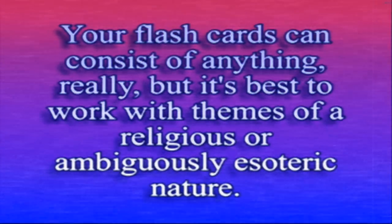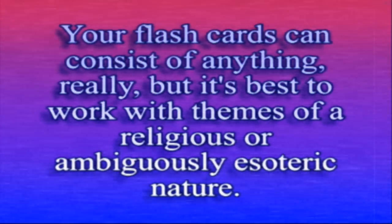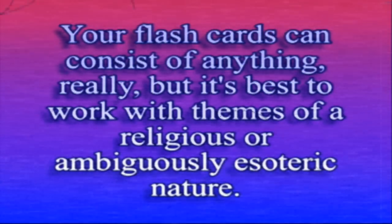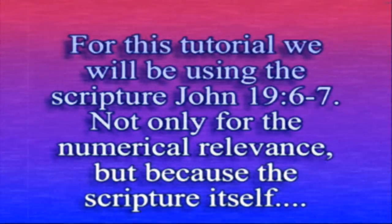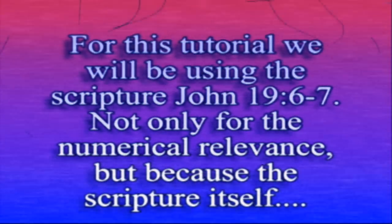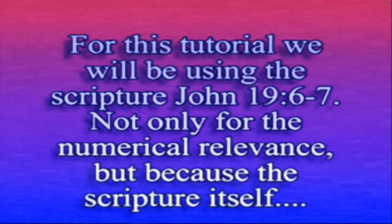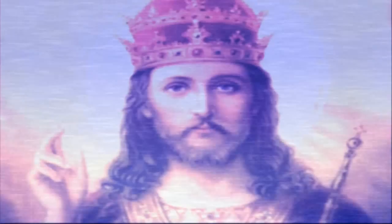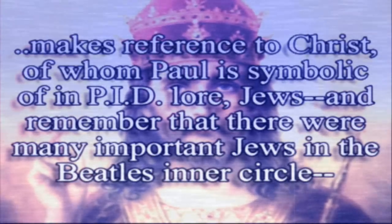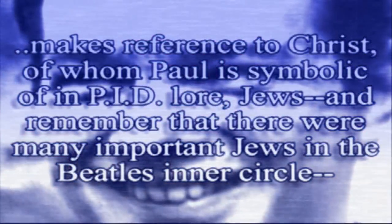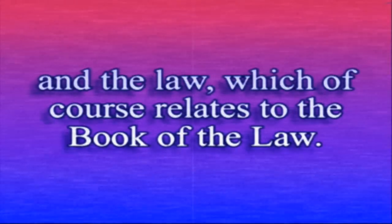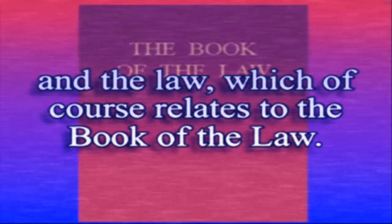Your flashcards can consist of anything, really, but it's best to work with themes of a religious or ambiguously esoteric nature. For this tutorial we will be using the scripture John 19, verses 6 and 7 — not only for the numerical relevance, but because the scripture itself makes reference to Christ, of whom Paul is symbolic of in PID lore, Jews — and remember that there were many important Jews in the Beatles circle — and the law, which of course relates to the book of the law.